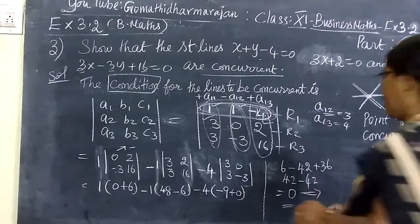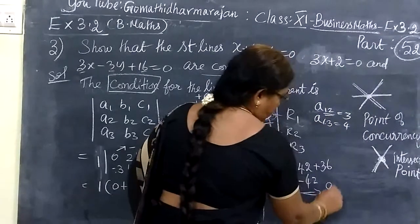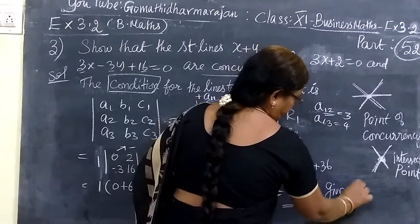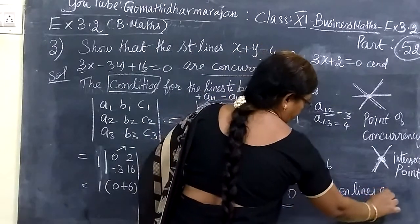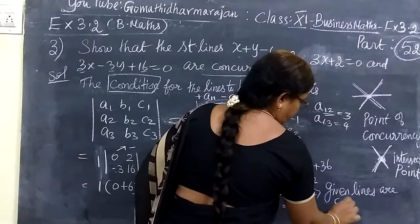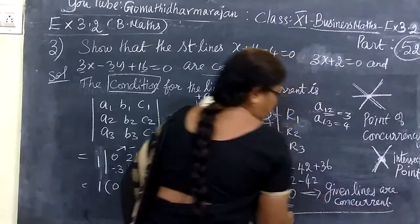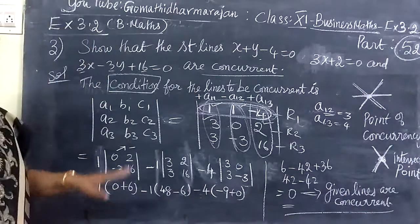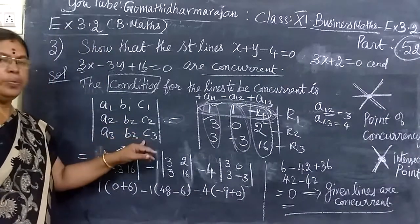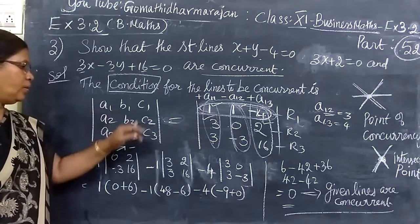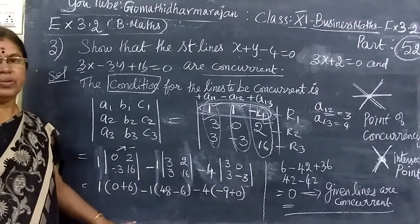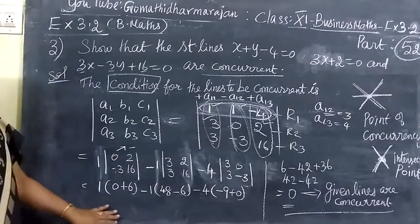So, this implies the lines are concurrent. So, we are writing given lines are concurrent. Concurrent means they are passing through the same points. To prove the lines are concurrent, we determined the determinant equals 0. Thank you.